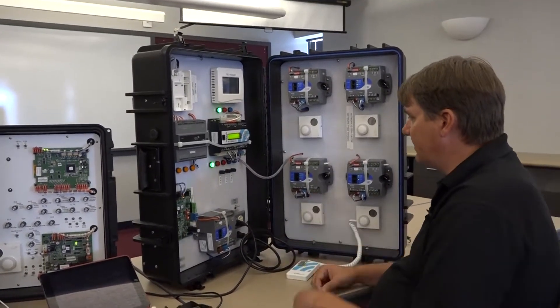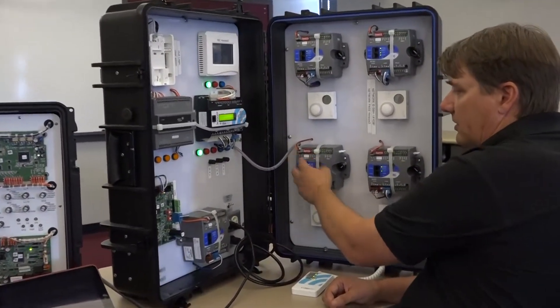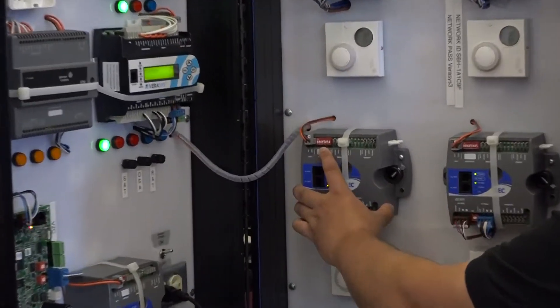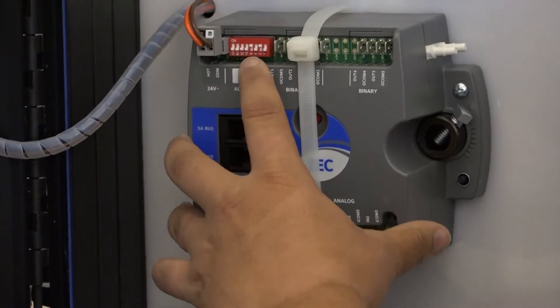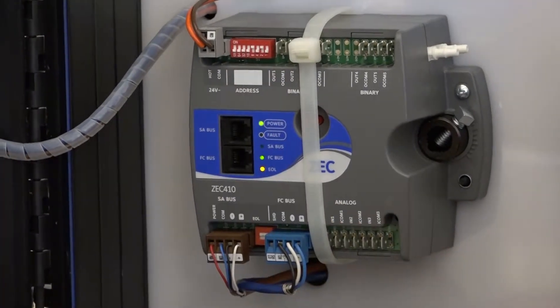So first off you can tell there's a power port up here. There's also an address switch which sets the address of what address it is on the zone bus of the zone coordinator.